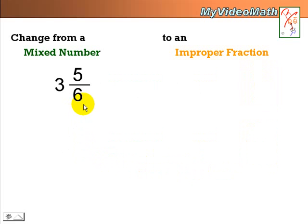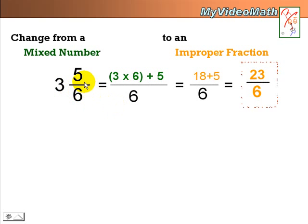Okay, you can work on your own. 3 and 5 6ths. 3 times 6 plus 5 equals 23 over 6. Did you get the right answer?